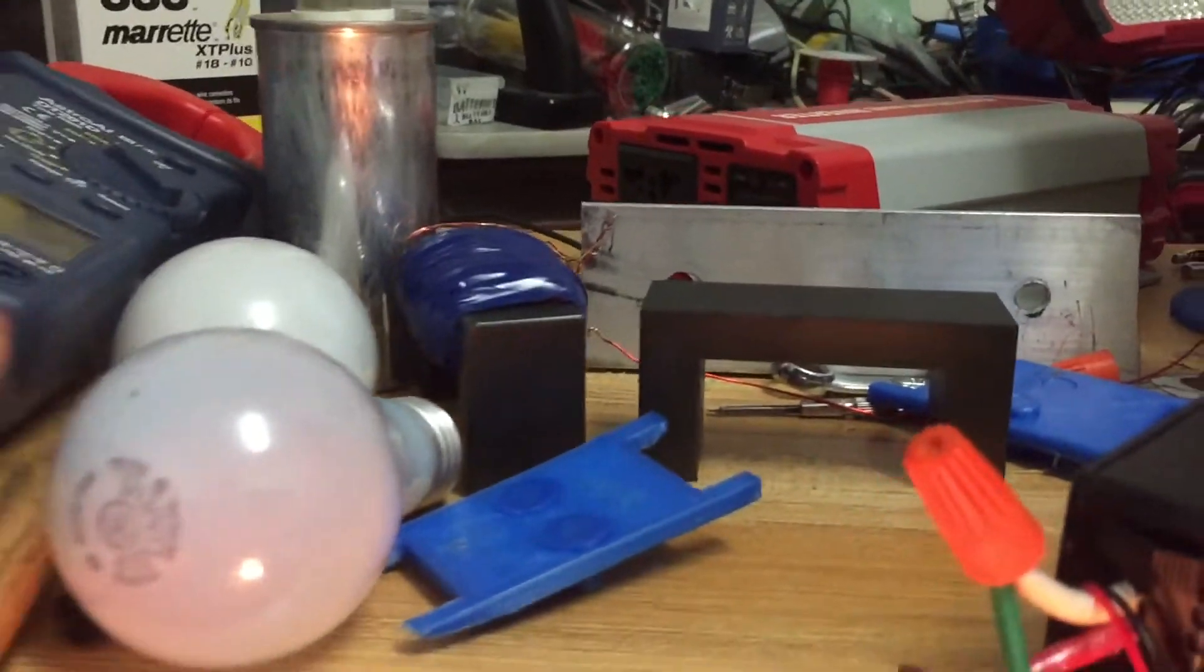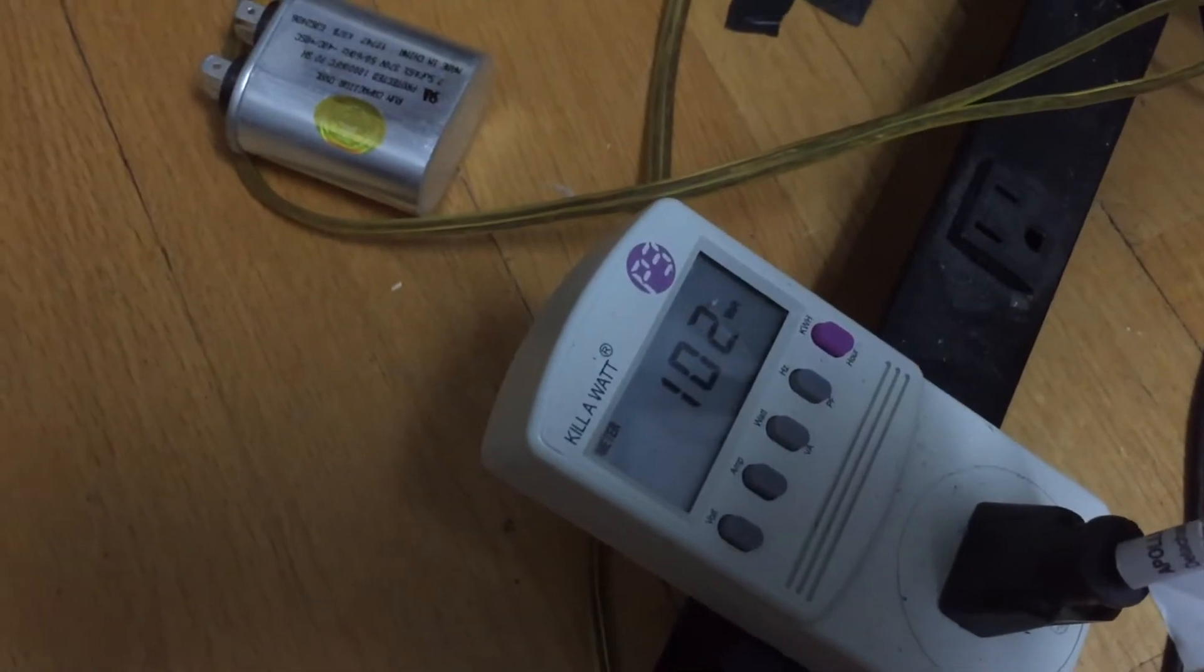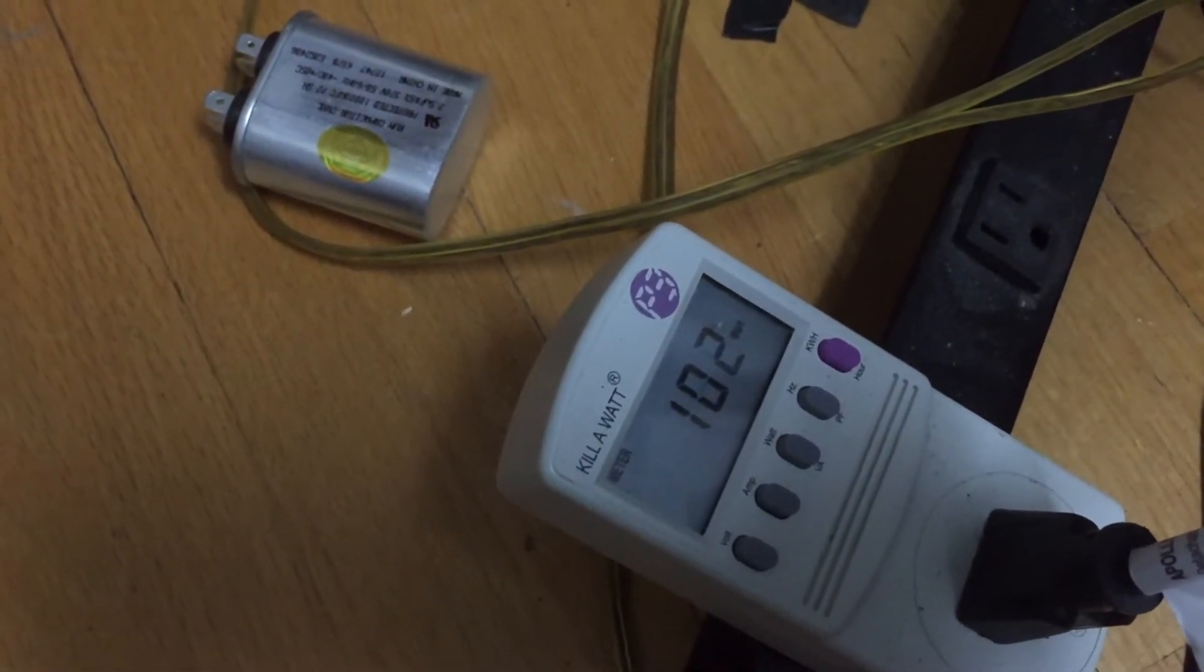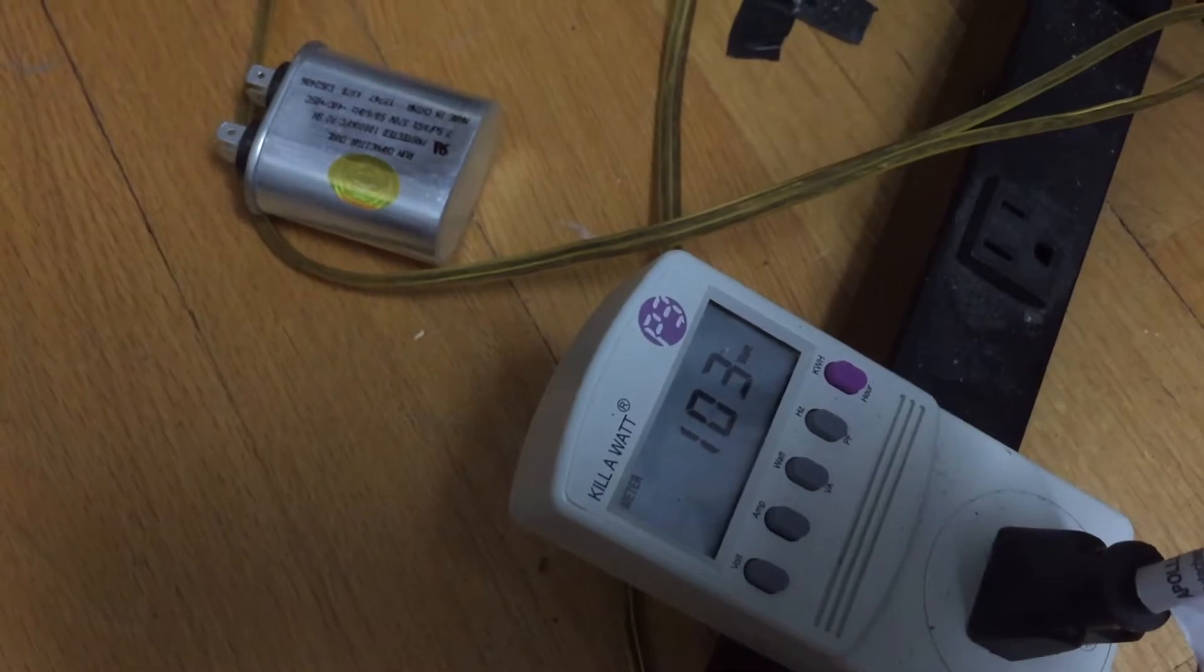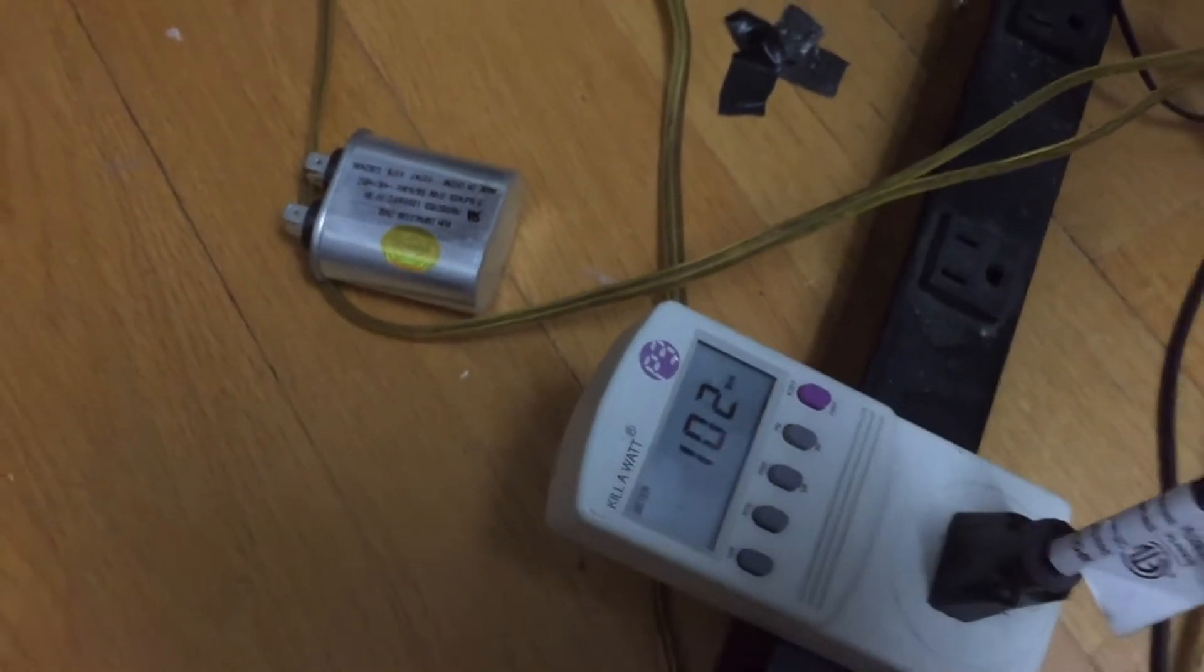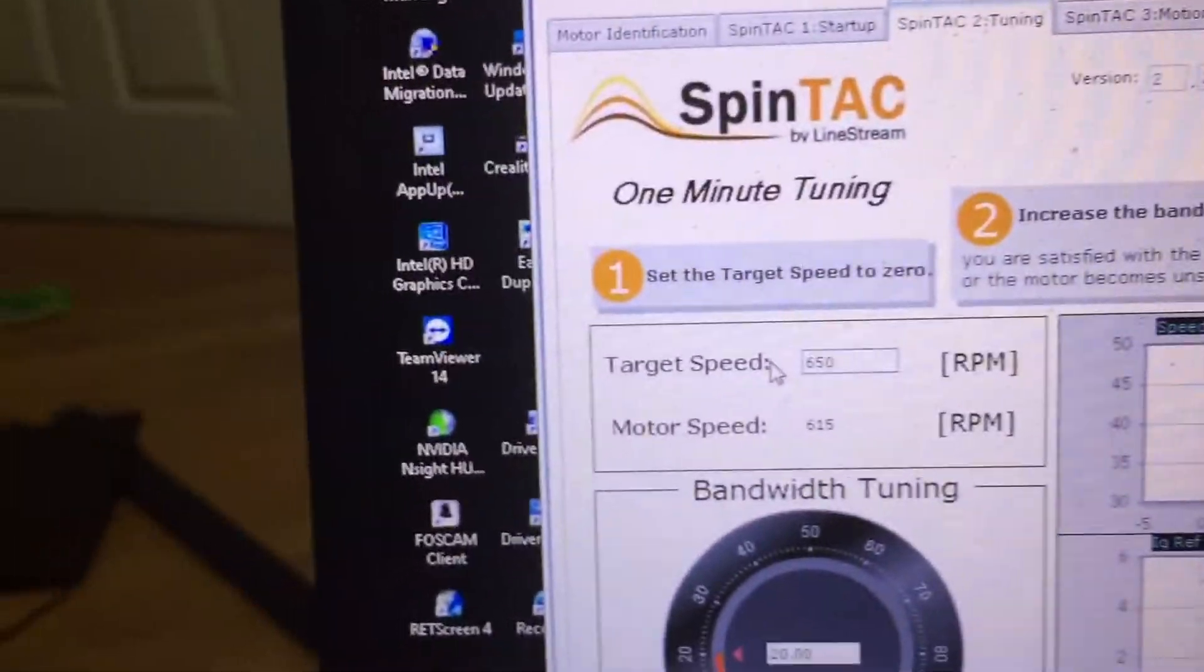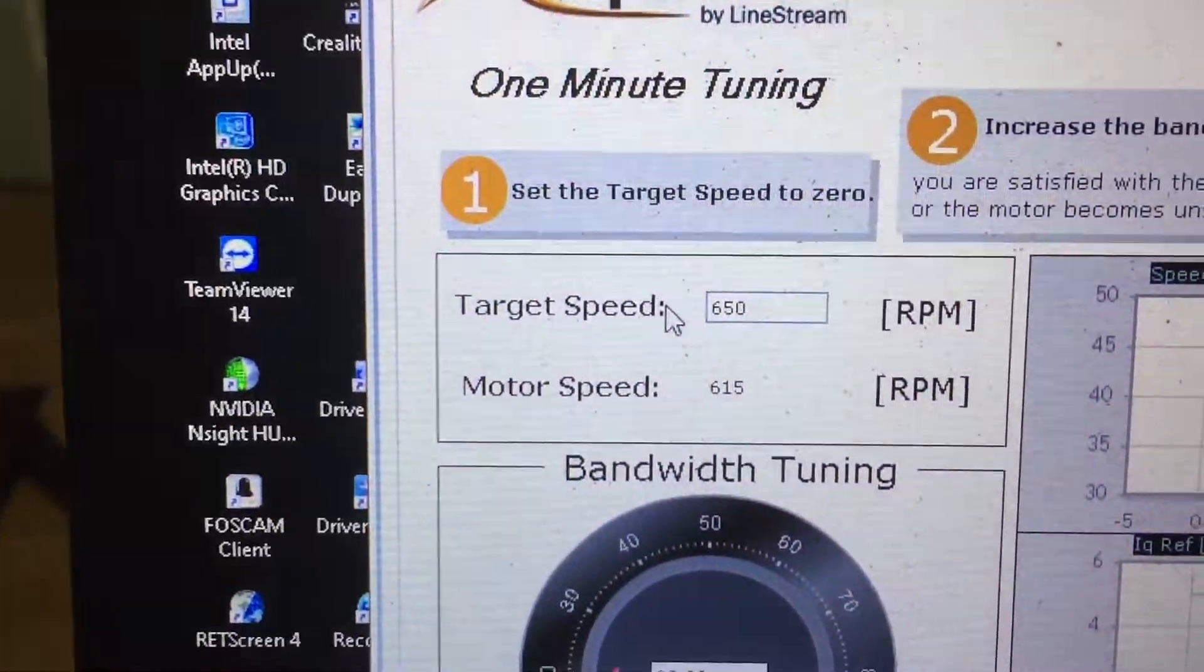Now the interesting part is I'm going to show you before I put the load on. First, the motor is pulling, it needs 100 to 300 watts to run. Now at 600 RPM, 600 RPM.